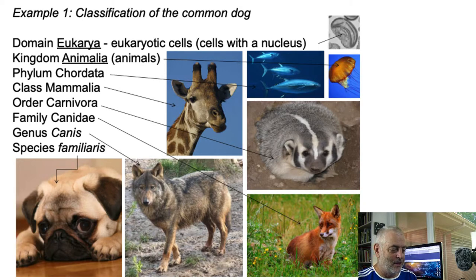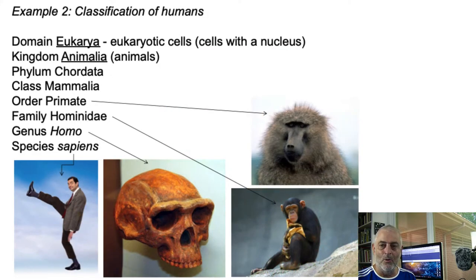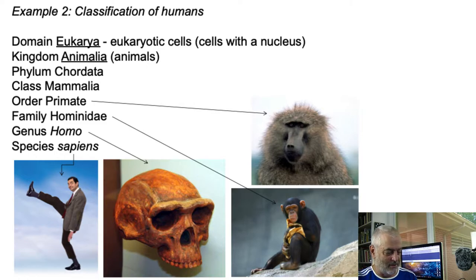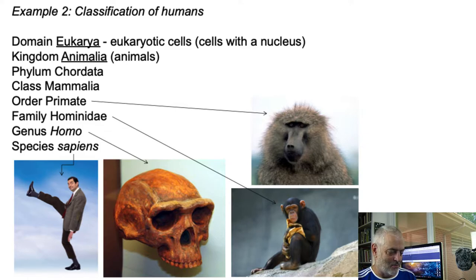If we did the same thing with humans, we'd follow the same line down until we got to order Primates. Within primates, there's a group called Hominidae, and of course we're Homo sapiens. There are also ancient species that belong to the human lineage, such as Homo erectus and Homo heidelbergensis.